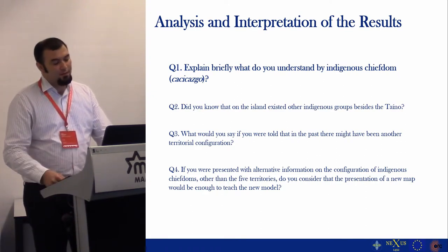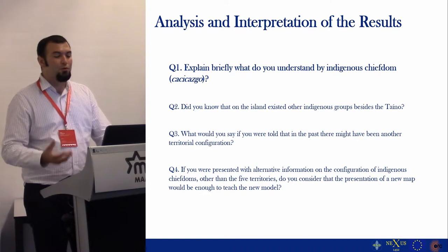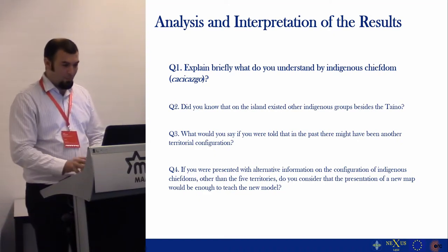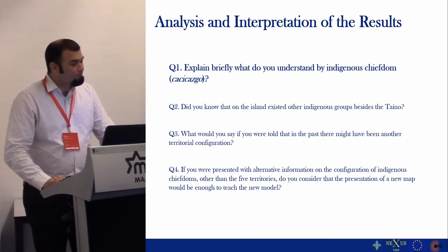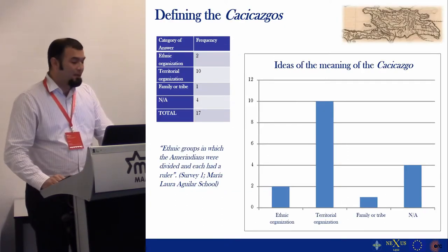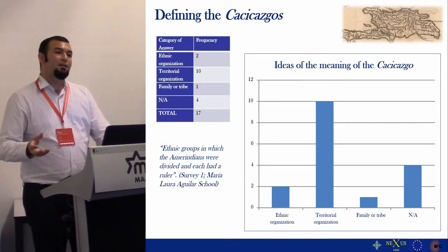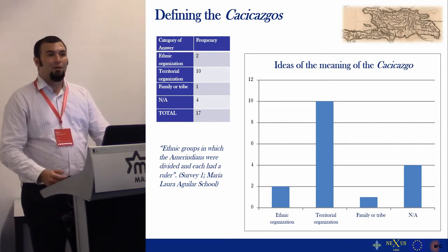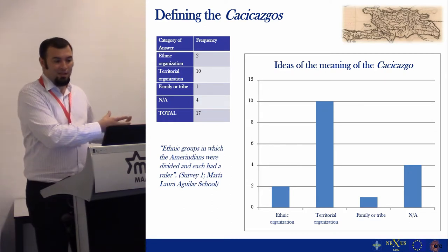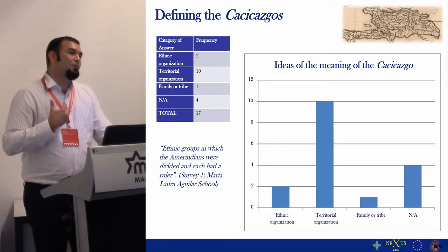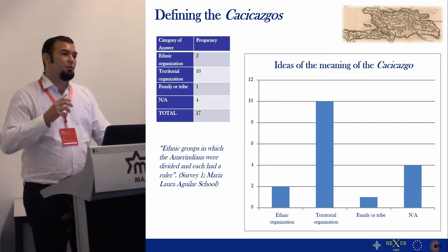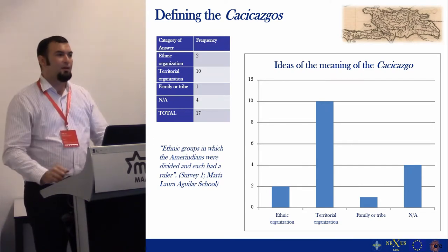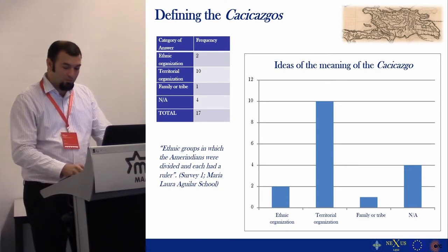The first question asked teachers to explain briefly what they understand by the meaning of 'chieftain' or cacicazgo. As you can see, most of the teachers thought that the concept of chieftain is related to territorial organization and not necessarily to political organization, which in our perspective is evidence of how the map shown earlier is very present in people's minds.